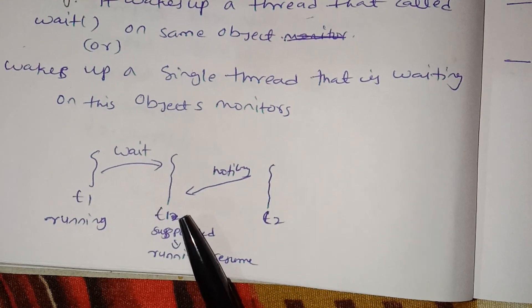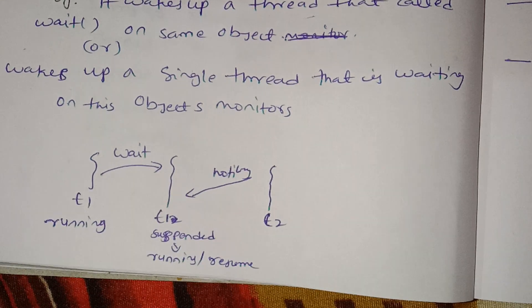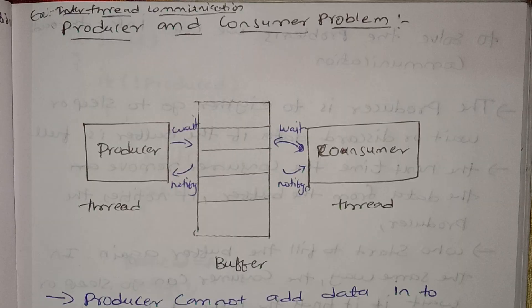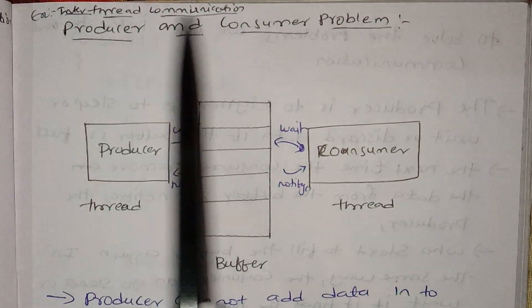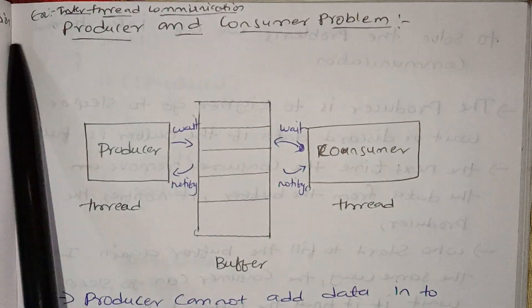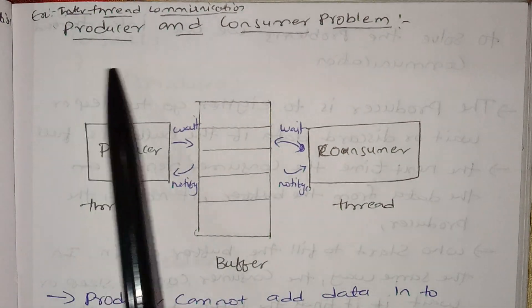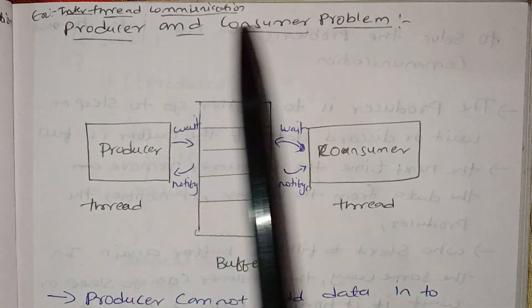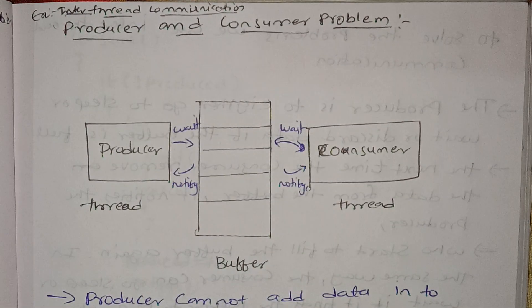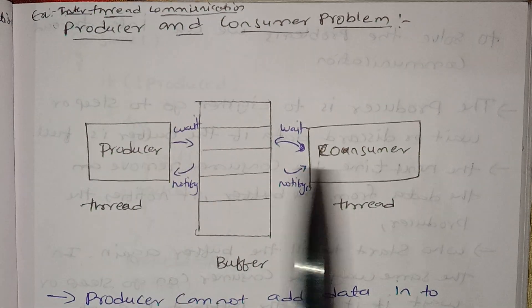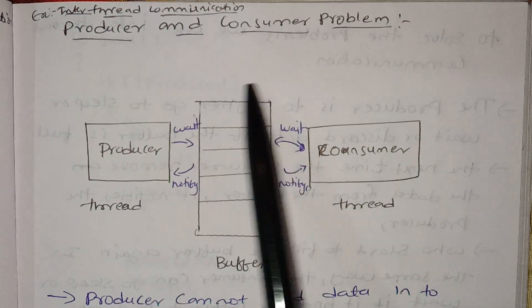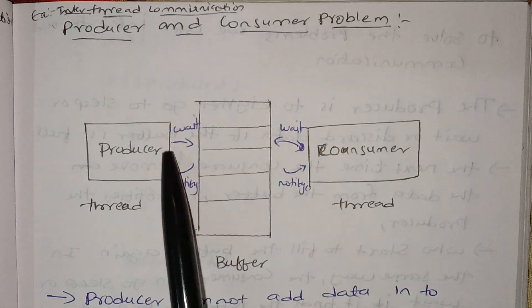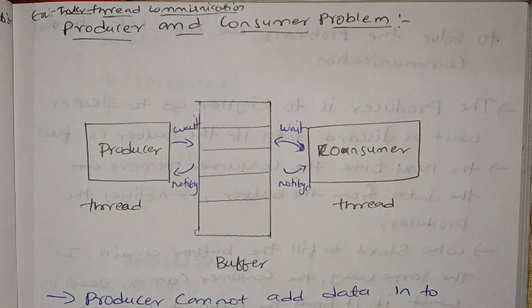Here is the example of inter-thread communication — the producer and consumer problem. Here we have a producer, a consumer, and a buffer.